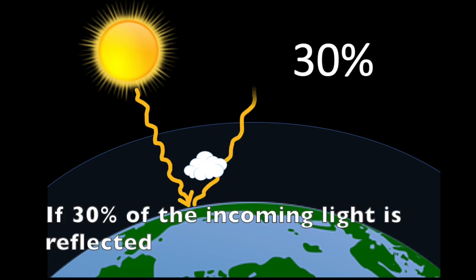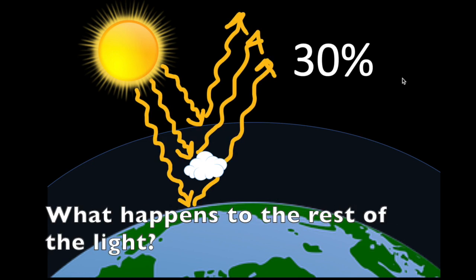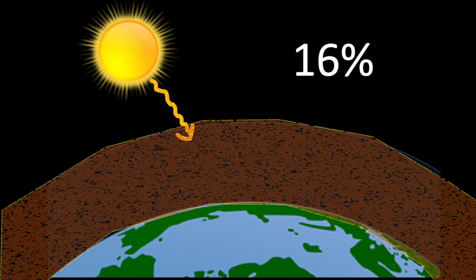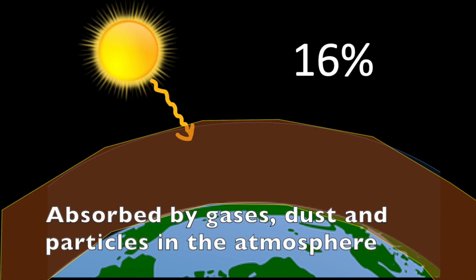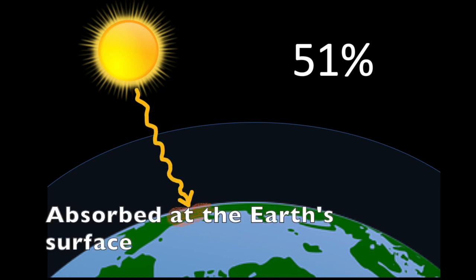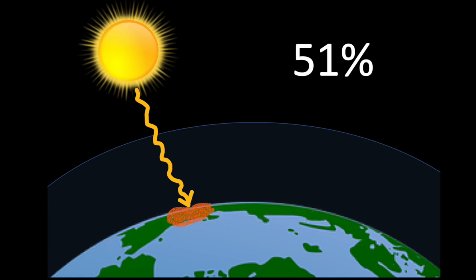So, if 30% of the incoming light is reflected, what happens to the rest of the light? Well, about 16% of the energy that reaches the Earth is absorbed by gases, dust, and particles in the atmosphere. Another 3% is absorbed by clouds. The remaining 51% is absorbed at the Earth's surface, and by this we mean both the land and the water, including the oceans.